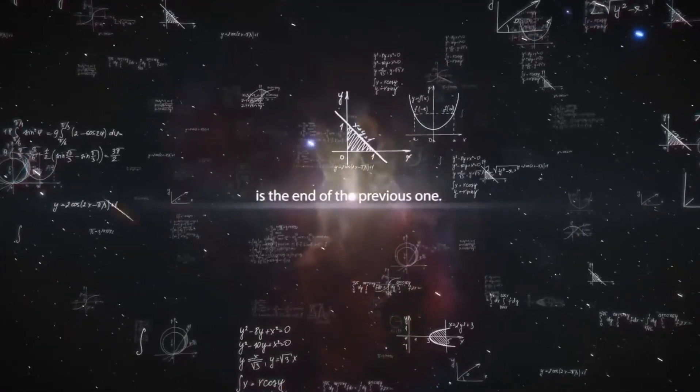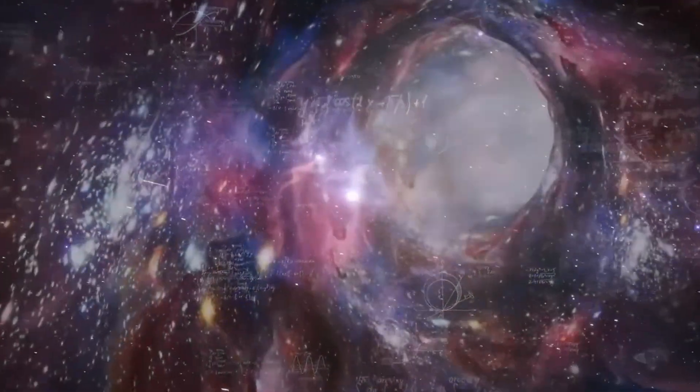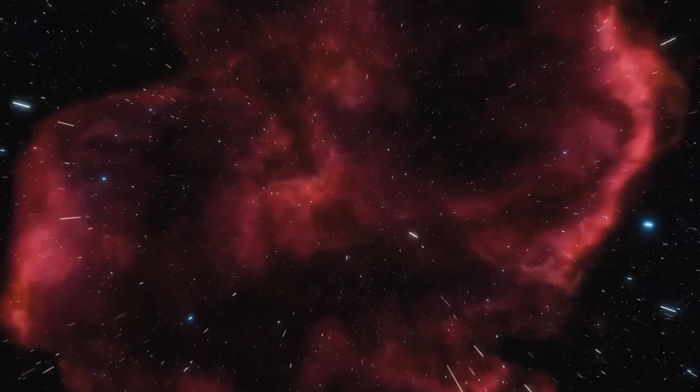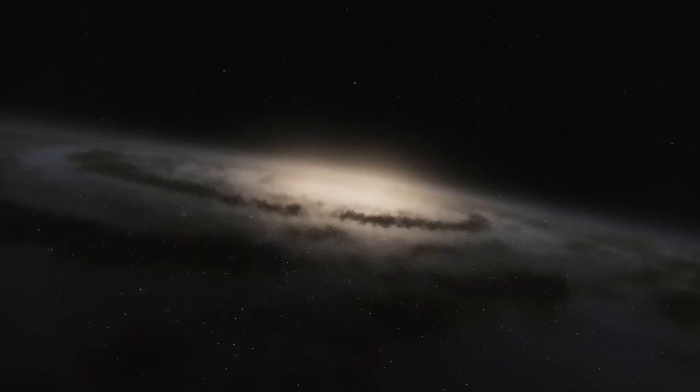To understand the scale of this supervoid, consider this: it's an incredible 1.22 billion light-years in diameter. Like a cosmic desert among the lush forest of galaxies, the Hound Dog Supervoid is an area of deep emptiness.